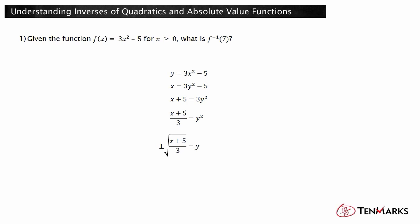Now let's think through how to choose the positive or negative square root. The domain of the original function is given as x is greater than or equal to 0. f of x is a parabola opening upward with a vertex of (0, -5). So the range of f of x is y is greater than or equal to negative 5. The domain and range are switched in the inverse. So the domain of f inverse is x is greater than or equal to negative 5, and y is greater than or equal to 0.